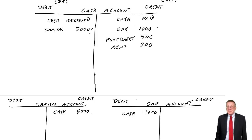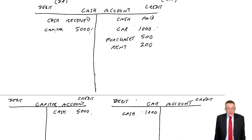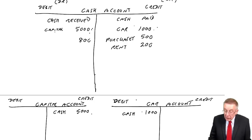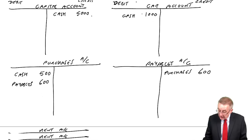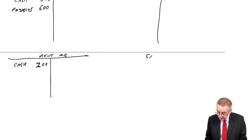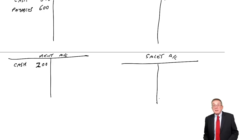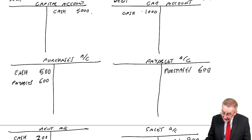Always two entries, always on opposite sides. Next, we sell half the goods for £800 cash. We've received cash — we sold them for 800 — so debit cash to record the fact we've got more cash. I need to record the fact we've made sales, so we'll open a sales account. Debit cash, credit sales 800.